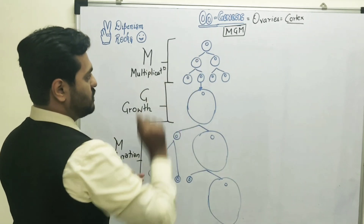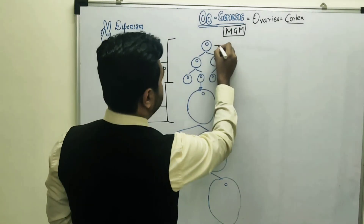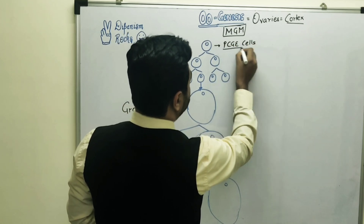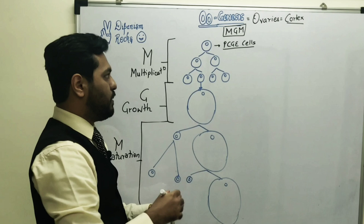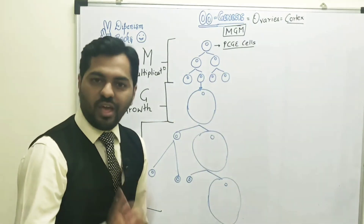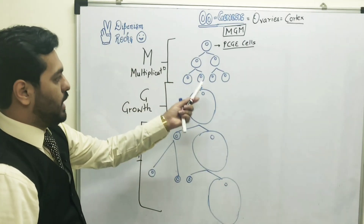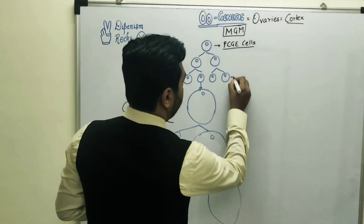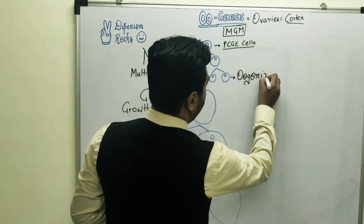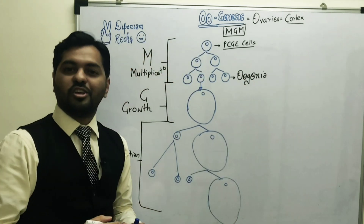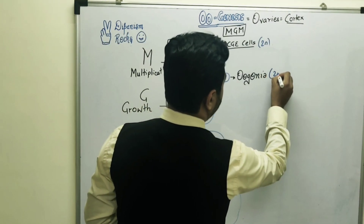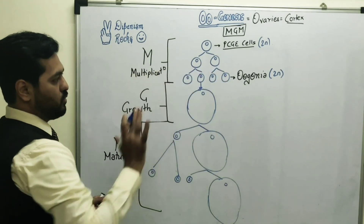The first cells found in the ovarian cortex are known as PGCE cells — primordial cuboidal germinal epithelial cells — which line the seminiferous tubules. These cells undergo repeated mitosis to produce many oogonia, similar to how spermatogonia are produced in spermatogenesis. These are diploid cells, formed by mitotic divisions.